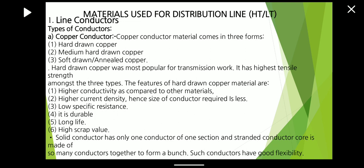Hard drawn copper has the highest tensile strength among the three types. Its features are: higher conductivity compared to other materials, higher current density — hence the size of conductor required is less — low specific resistance, and it is durable with long life and high scrap value. A solid conductor has only one section, whereas a stranded conductor core is made up of many conductors together to form a bunch. Such conductors have good flexibility.